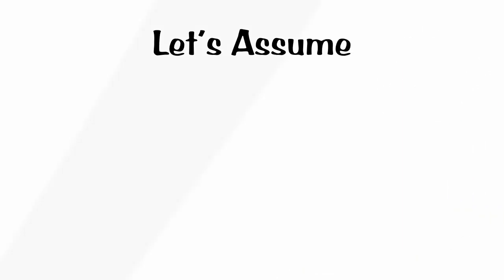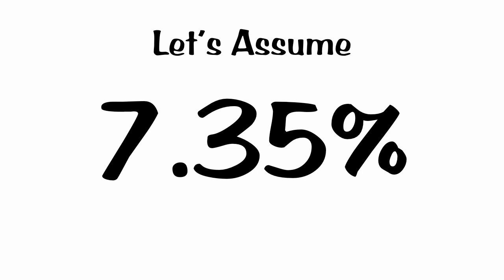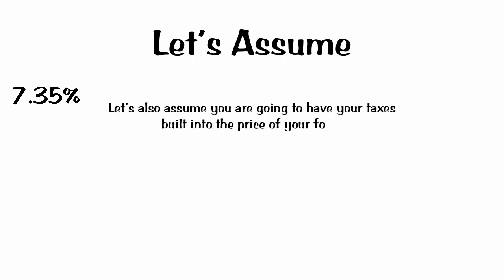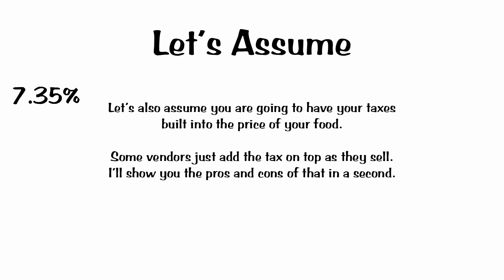Some people advise you on how to collect tax and make it sound simple by saying: just take your total sales for the month and multiply it times your tax rate — that's your tax due. I'm going to assume you're going to have your taxes built into the price of your food. So if you have a $5 happy meal, it's going to be five bucks to the customer — not plus tax. Some vendors just add the tax on top as they sell; I'll show you the pros and cons of that method and you can make a more educated decision.